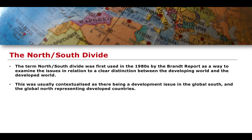It was seen as broadly divided along global North and global South lines, with a geographical representation. The developed world includes countries like the United States, Canada, and Europe, while the global South included developing countries like the African states, to a meaningful extent the Middle East, and Latin America and parts of Southeast Asia.